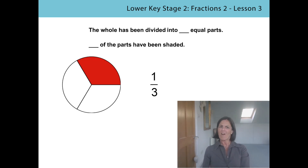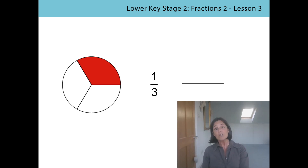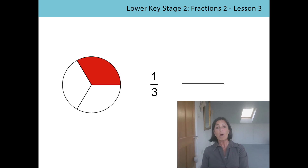You guys are so good at this — I think you could even say it without having it written on the screen. Shall I remove it? Let's see: the whole has been divided into three equal parts, one of the parts has been shaded. I knew you could do it! So each time we write a fraction, what is the first thing we need to draw? That's right, it's the division bar, because that shows us the division relationship between the whole and the parts. And then where are we going to look? We're going to look at the whole and see how many equal parts it's been divided into, and write that at the bottom of our fraction.